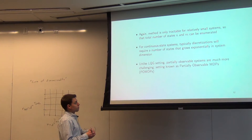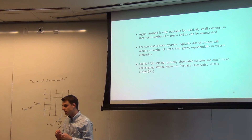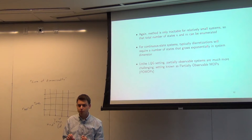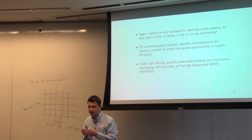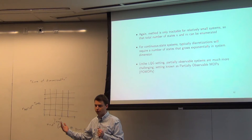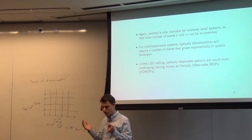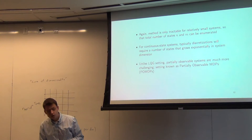In the LQG setting, even with partial observability, you can still do the optimal thing: estimate the current state with a Kalman filter—a fancy least squares method that takes all past measurements—and then plug that estimate into the LQR controller. This is called the separation principle: you can separate out the estimation task and the control task.